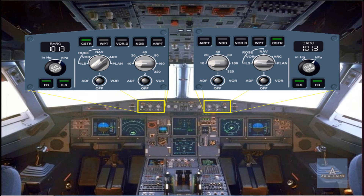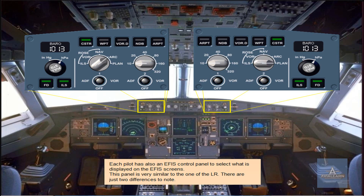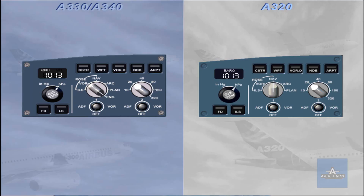Each pilot also has an EFIS control panel to select what is displayed on the EFIS screens. This panel is very similar to the one on the Long Range, with just two differences to note. On the A320 EFIS, the engine main parameter display mode does not exist. The LS push button label, anticipating other systems than ILS on the Long Range, still remains the ILS push button label on the A320. However, the push buttons have the same function.